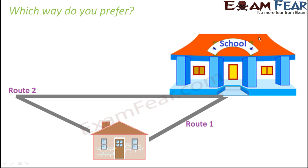Route number one is to come directly from school to home. Route number two is to start from school, go the other side, take a turn, and then come home. So if I ask you which one would you choose — the longer route number two, or the quicker and shorter route number one? Of course you will prefer route number one because it is a shorter route.